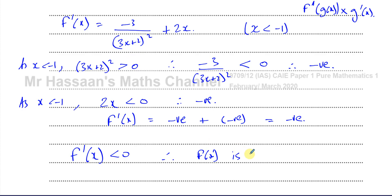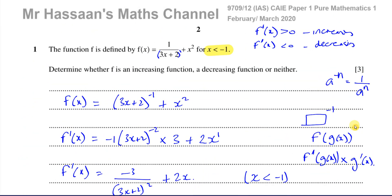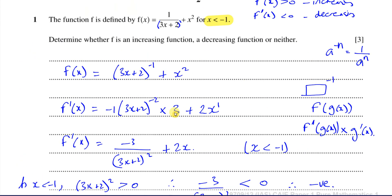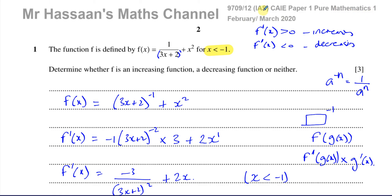Therefore f(x) is a decreasing function, because the gradient function is always less than 0. That's the answer to Question 1 from February-March 2020 — this question is all about differentiation, types of functions, and included an example of the chain rule, which appears earlier in the Cambridge syllabus than it does in Edexcel. Other questions from this paper and about differentiation can be found in the playlists linked here. Subscribe to the channel and thank you for watching.